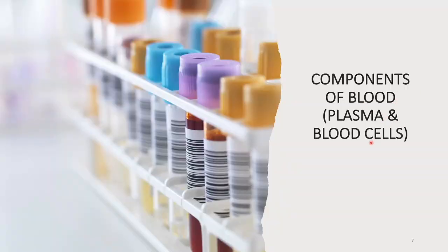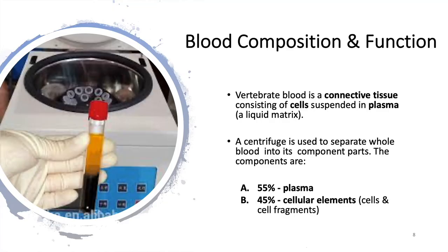The components of blood are plasma and blood cells. Vertebrate blood is a connective tissue consisting of cells suspended in plasma, a liquid matrix. A centrifuge machine separates substances of different densities in a sample by rotating the sample at a very high speed, causing substances to be displaced outward. A centrifuge is used to separate whole blood into component parts: plasma at 55% and cellular elements at 45%, consisting of cells and cell fragments.